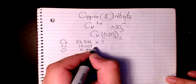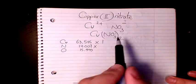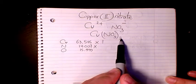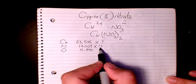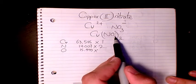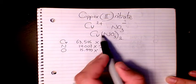So copper, how many copper do we have? We have just one. How many nitrogen atoms we have? We have two here because this two belongs to the whole thing, so two. And oxygen, three times two, again two belongs to the whole thing, so two times three is going to be six.